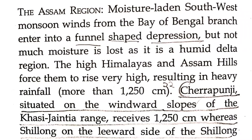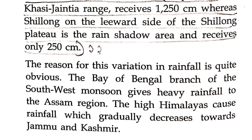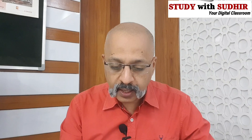The Assam region is very interesting and important. The moisture-laden southwest monsoon winds from the Bay of Bengal branch enter into a funnel-shaped depression, and not much moisture is lost as it is a humid delta. Cherrapunji, situated on the windward slopes of the Khasi-Jaintia range, receives 1250 centimeters, whereas Shillong on the leeward side is in the rain shadow area and receives only 250 centimeters. So it really depends on which side of the hill range a location is on.